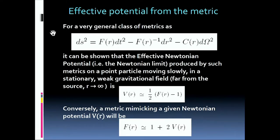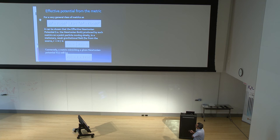So now, I just would like to recall for a second what we mean, what we know for effective potential from a metric. You have a general metric of this kind. It can be shown that the effective Newtonian potential, or the Newtonian limit, produced by such a metric is given by an expression like this for far from the source. This is the Newtonian potential acting on a point particle moving slowly in a stationary and weak field. And of course, conversely, you can write down a metric mimicking a given Newtonian potential in this way.